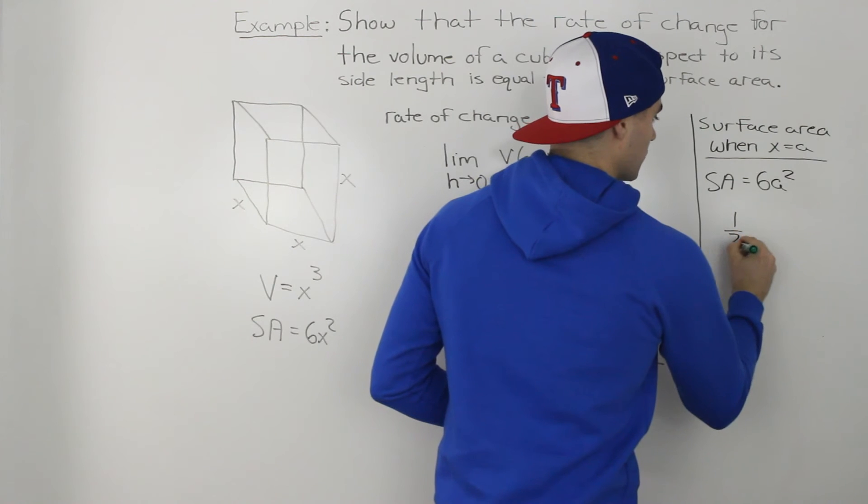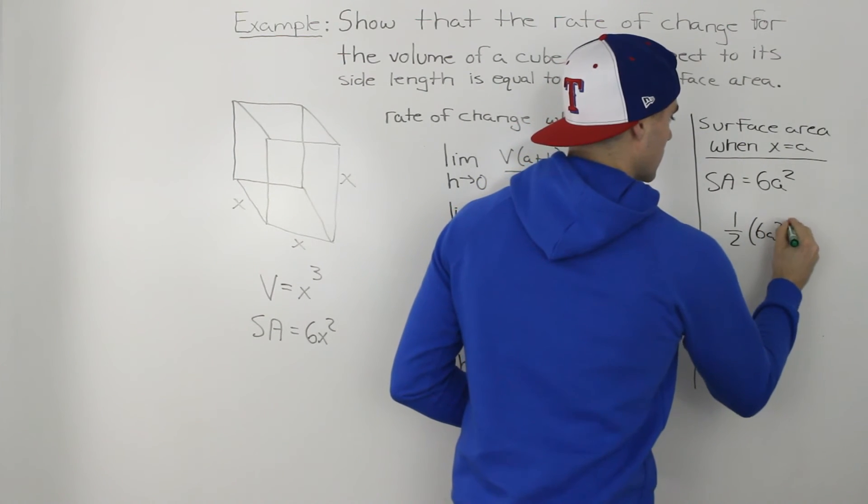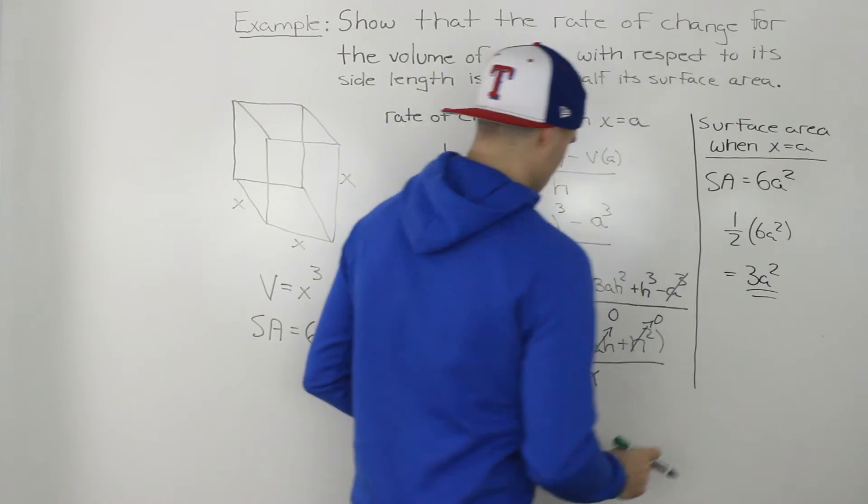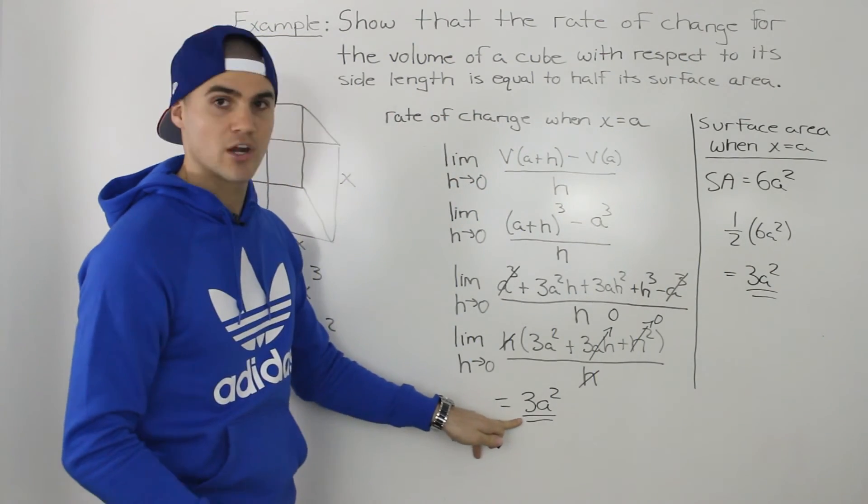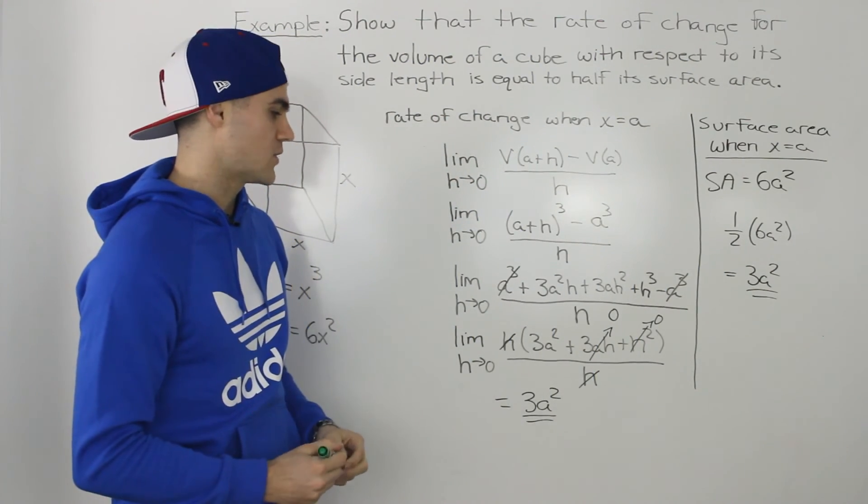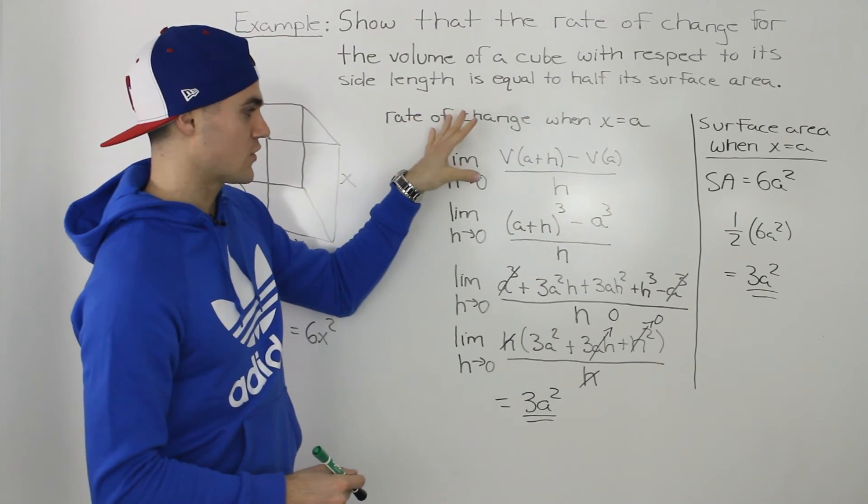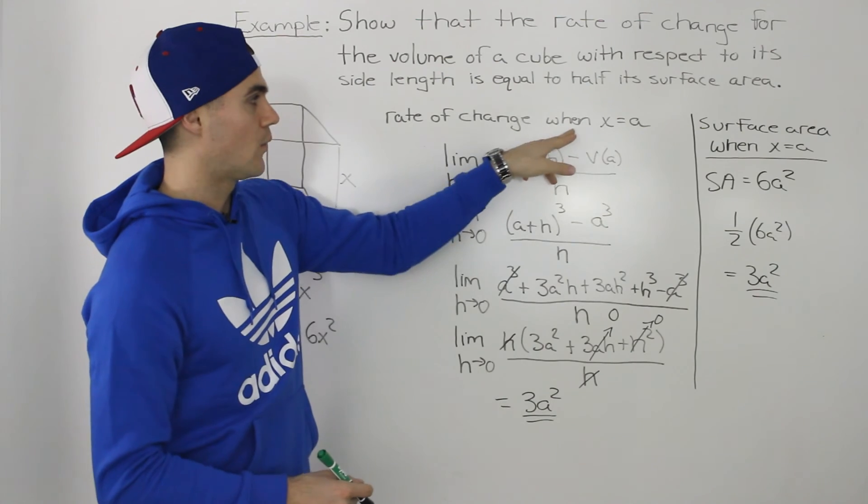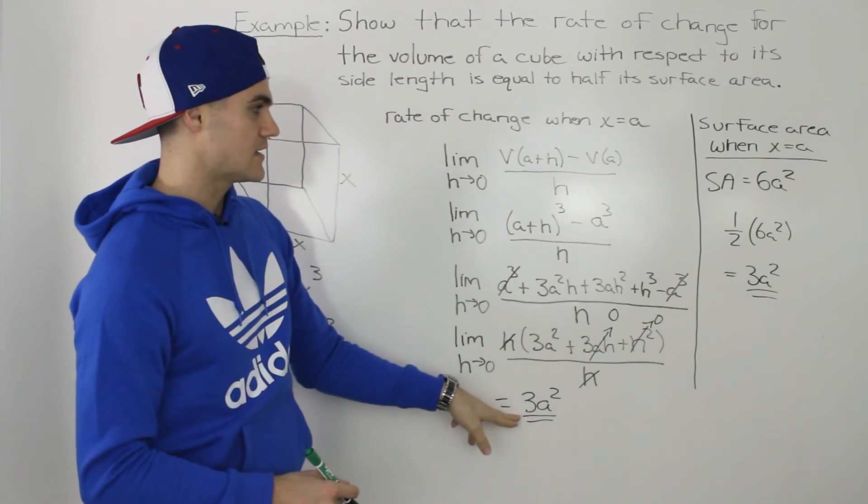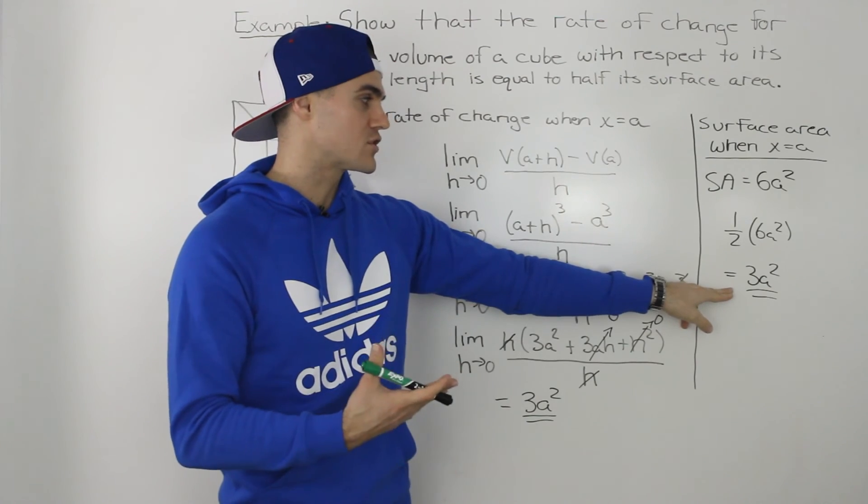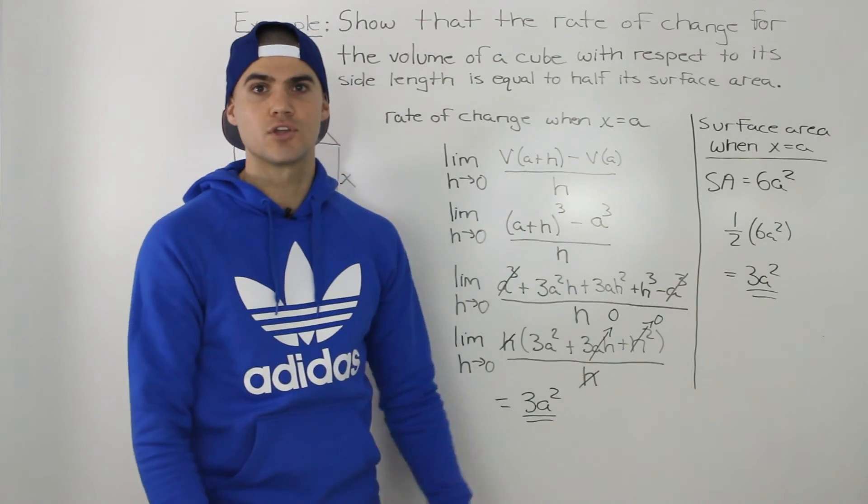So if we take that and multiply it by a half we would end up getting 3a squared. Which if you notice it's the same general expression. So that is the question. We proved it. The rate of change for the volume of a cube when the side length is equal to a is equal to half its surface area or half the surface area of that same cube.